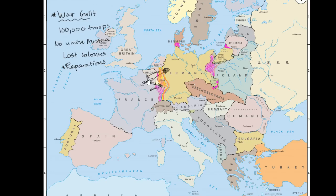Coming out of the Treaty of Versailles, every attempt was made to cripple Germany's war-making abilities. Germany was forbidden from trading in arms and couldn't have many types of offensive weapons. In a large degree, this really was a catalyst for giving energy to more extreme elements in Germany, and would be one of the things pointed to for Germany's involvement in World War II.